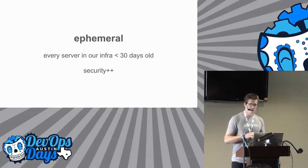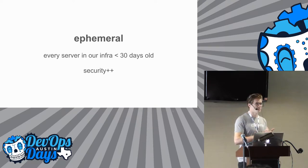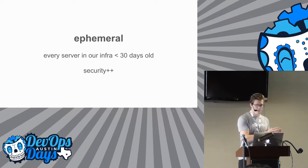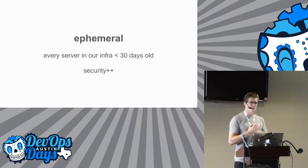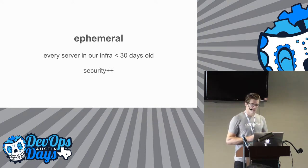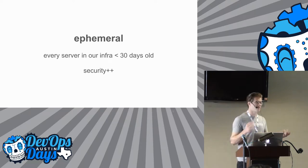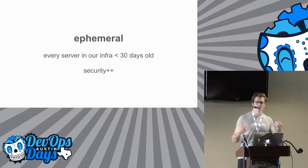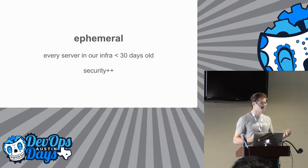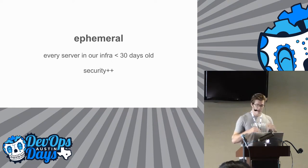This is a really, really challenging problem and means we have to handle state on all of our services in an interesting way. It's a huge benefit for security because every time we roll a service, we're pulling in all patches that have come out since then. We're also ensuring that if anyone were to gain a foothold in our environment, we're going to force them to constantly re-exploit the same vulnerability. We have quite a lot of monitoring and alerting on any anomalous activity, so forcing someone to exploit the same vulnerability over and over is something we'd eventually pick up — a huge security win.